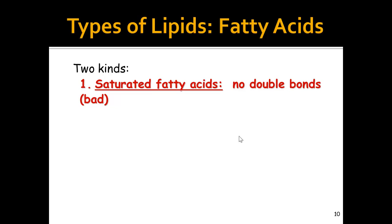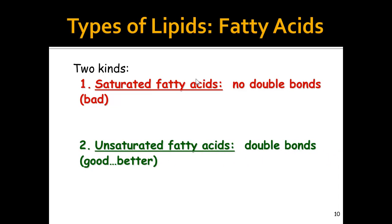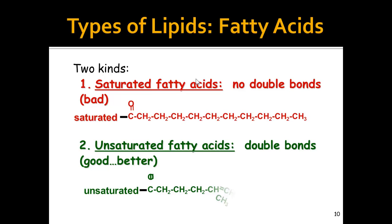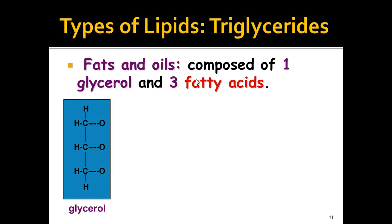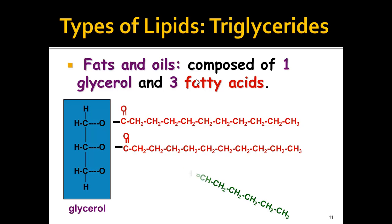Polymers are made up of small monomers. Carbohydrates are made up of monosaccharides. Lipids are made up of fatty acids — that's their monomer. Unsaturated fatty acids are better for you. A triglyceride is found in fats and oils; it's composed of one glycerol and three fatty acids. You have the one glycerol with one, two, three fatty acids attached — that's the structure of a triglyceride.